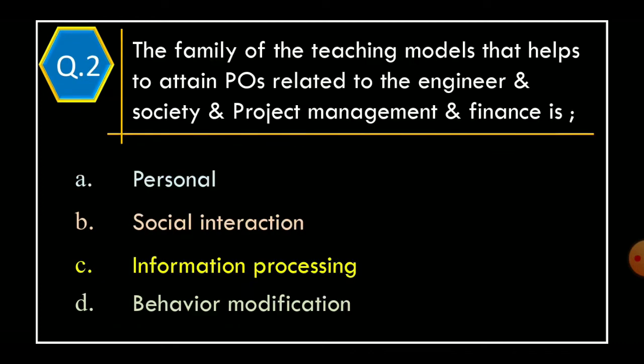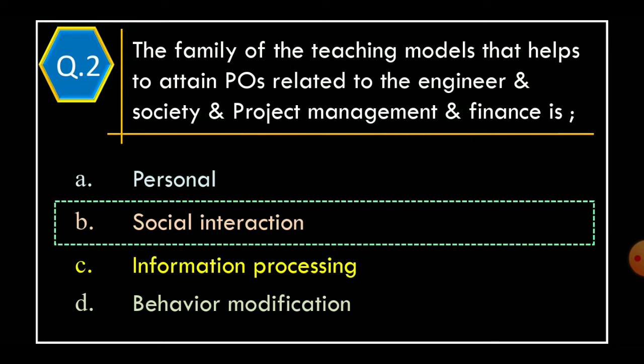Question 2. The family of teaching models that helps to attain POs related to engineer, society, project management and finance is: Option A – Personal. Option B – Social interaction. Option C – Information processing. Option D – Behavior modification. The correct option is Option B: Social interaction.